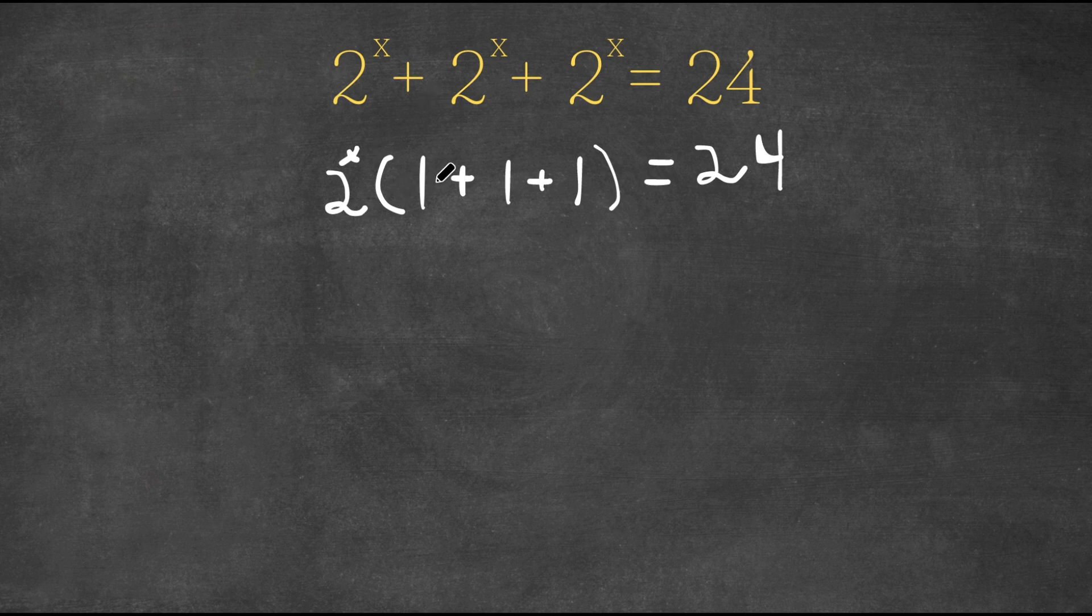So now we have 2 to the power of x times 1 plus 1 plus 1 is equal to 24. Now if we add what's in the parentheses, so 1 plus 1 plus 1, we get 3. So we get 2 to the power of x times 3 is equal to 24.